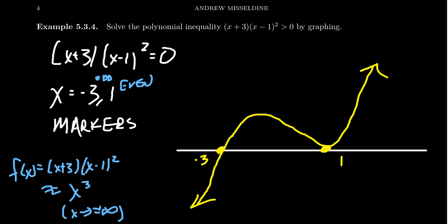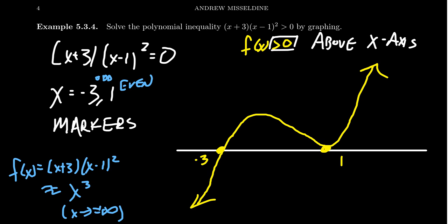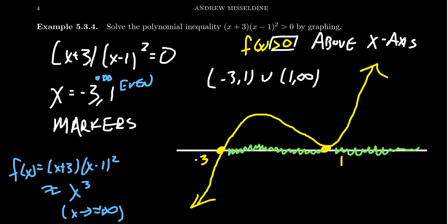Now remember, we're trying to solve the inequality f(x) > 0. Greater than zero means we're looking for y-coordinates that are above the x-axis. What we see here is that we're going to be above the x-axis when we're to the right of negative three, coming along to the x-intercept at one. And then after one, we're above the x-axis forever afterwards. So our solution in interval notation is (−3, 1) union (1, ∞). Notice that the x-intercepts are not included because they're on the x-axis — their y-coordinate is zero, not above it.